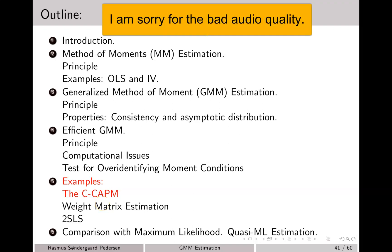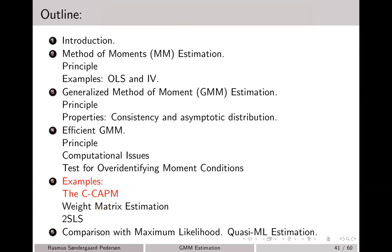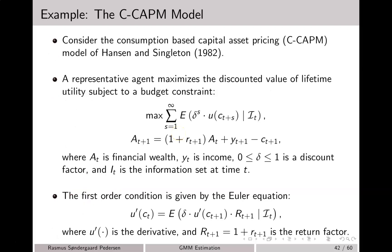In this video, we consider GMM estimation of the consumption capital asset pricing model. We consider a setting that is very similar to the classic paper by Hansen and Singleton in Econometrica in 1982.